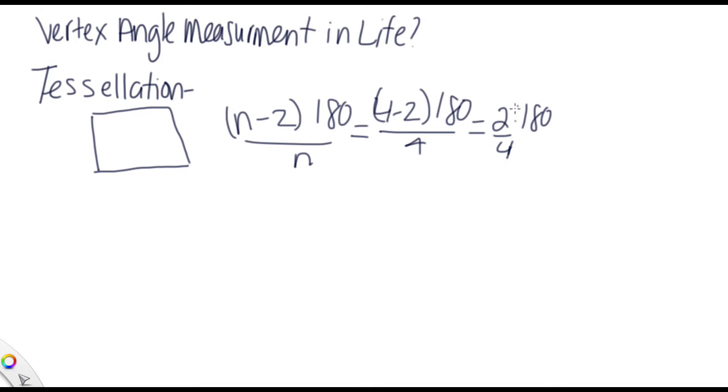Which we cancel, this becomes 2, and the 2 will go into 180 90 times. So it's 90 degrees per side, per angle, every angle. And there's four sides, so that means the shape takes up 360 degrees.